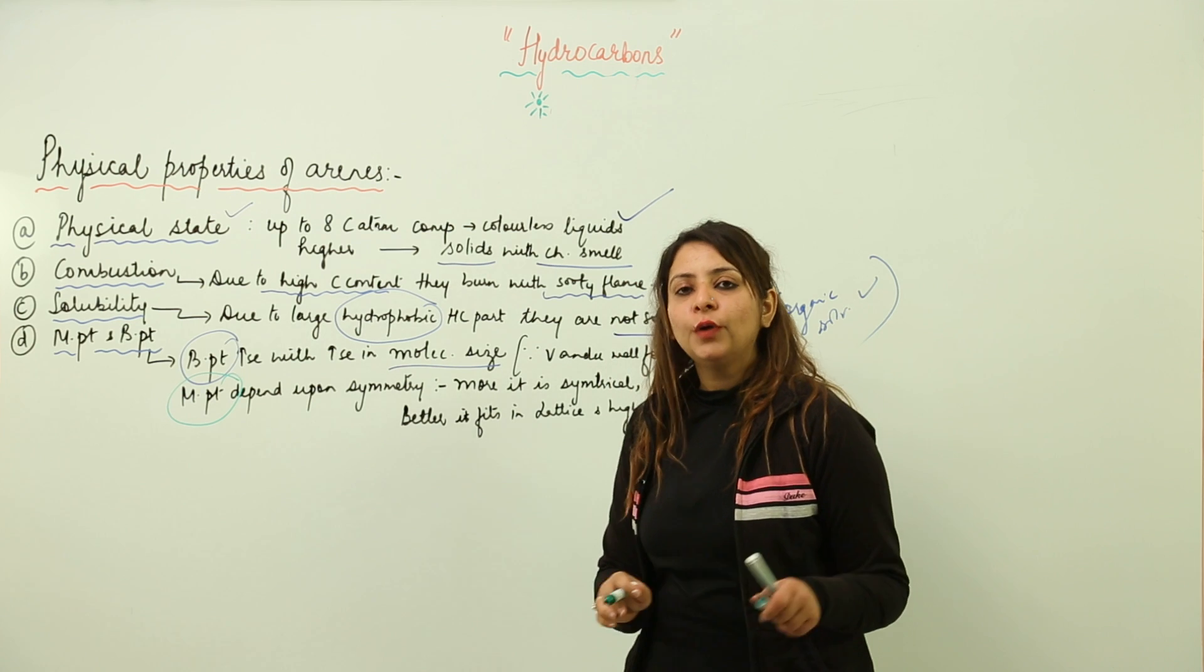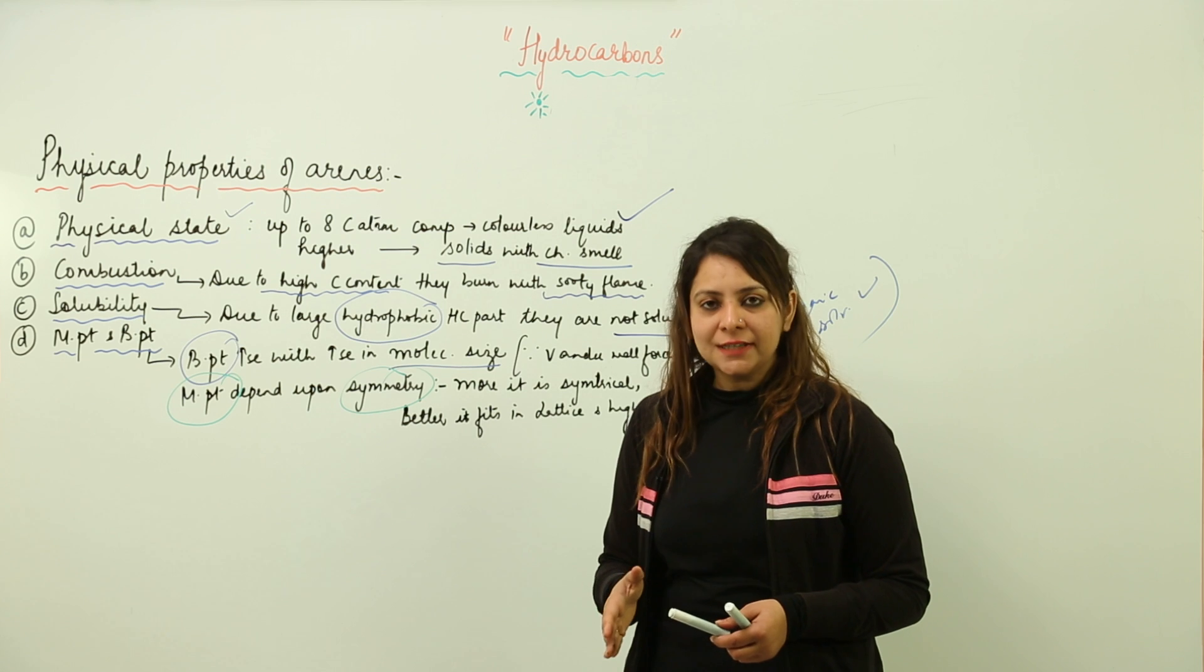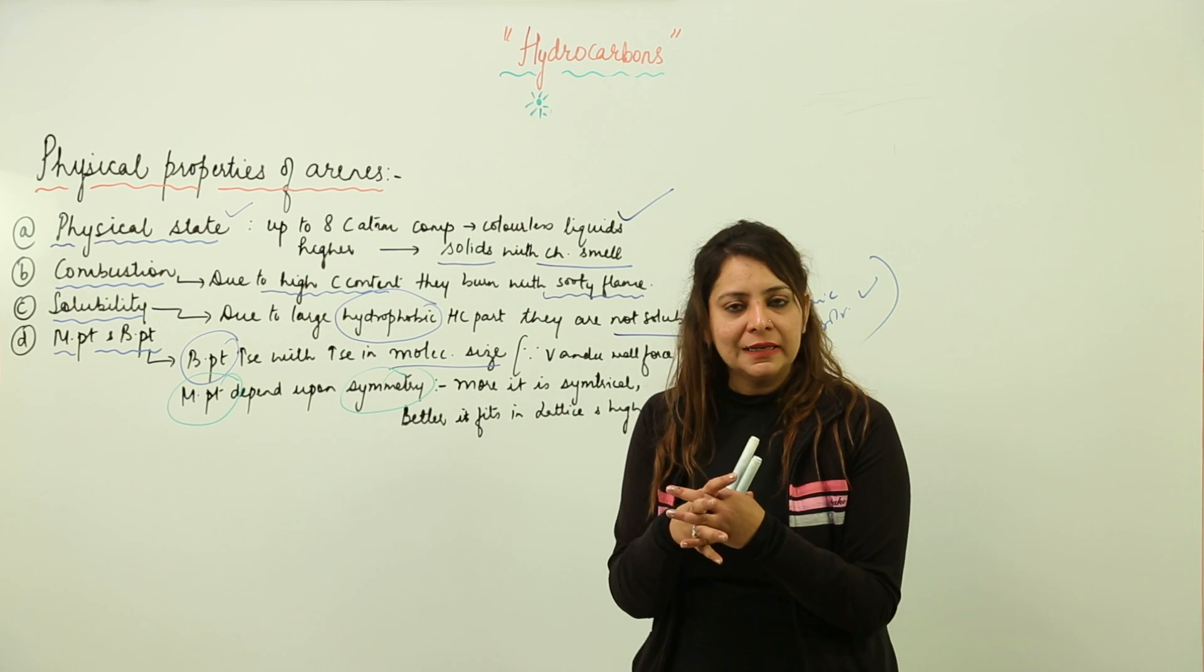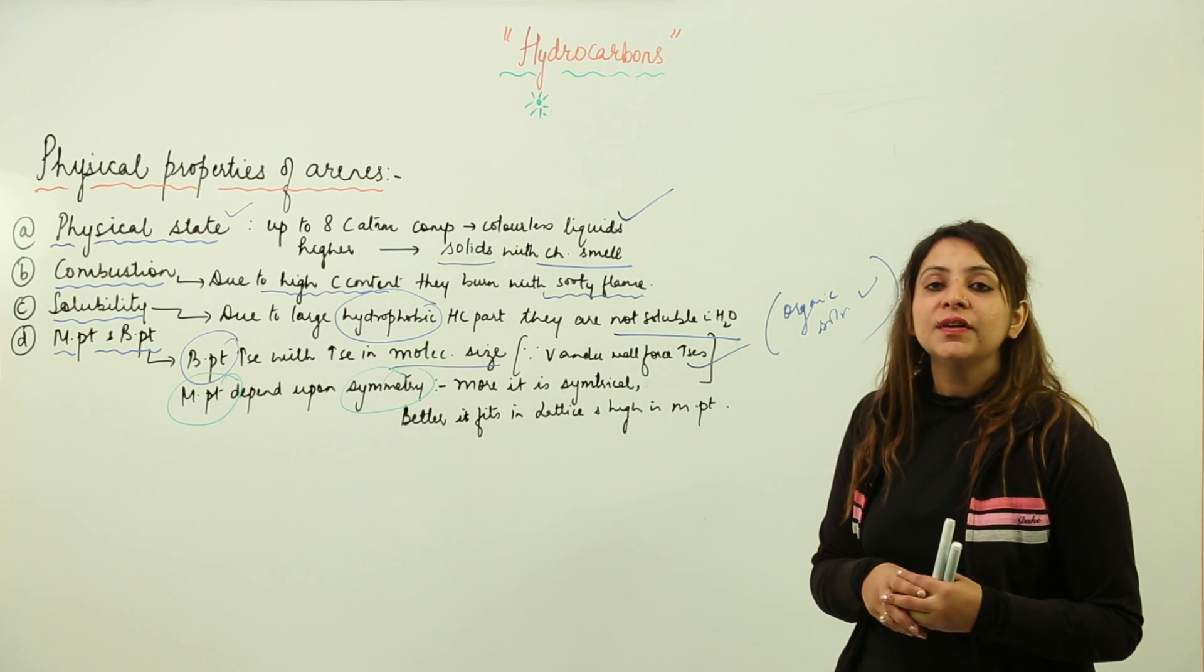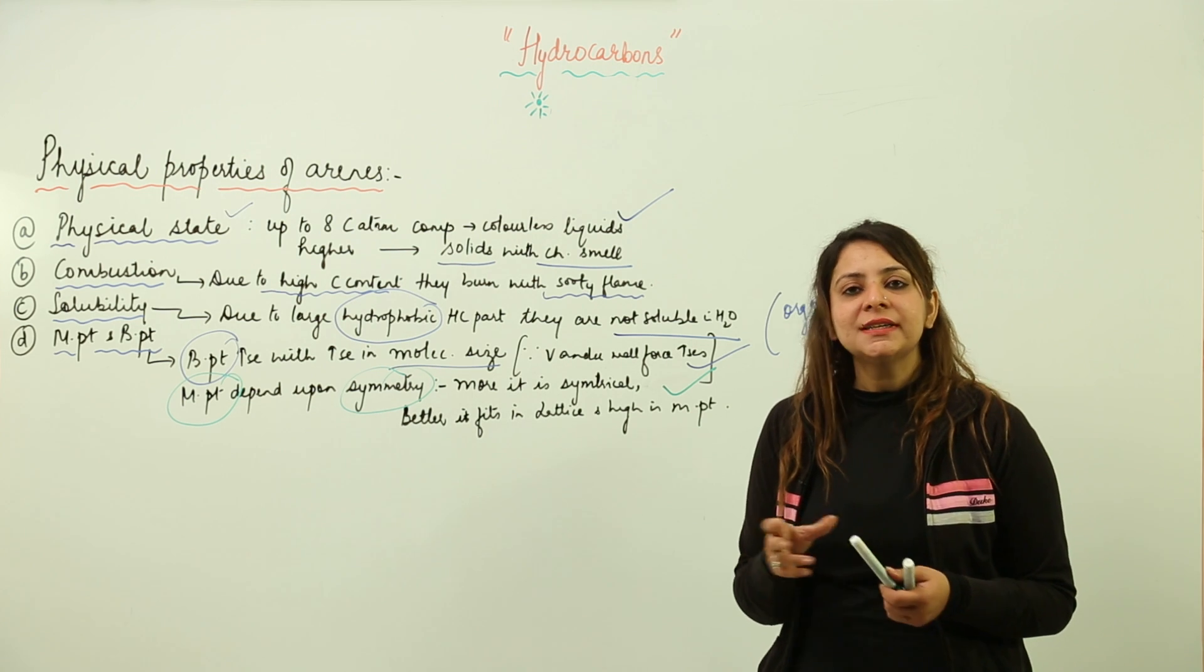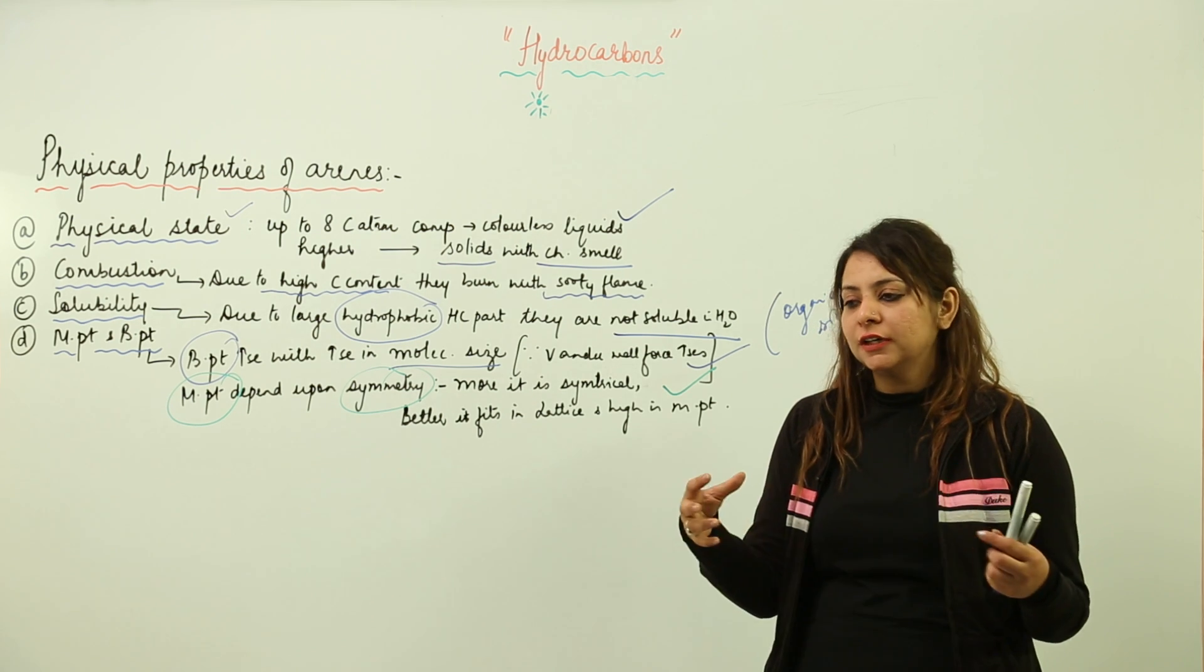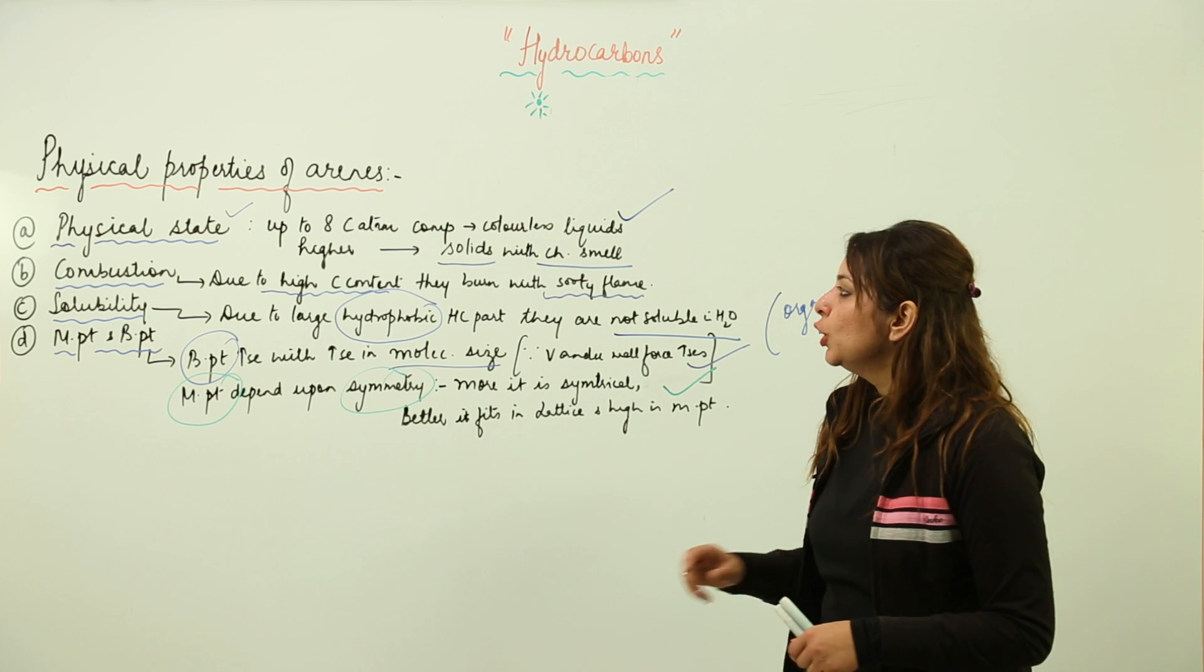On the other hand, if you see the melting point, melting point depends upon Van der Waals force and moreover it depends upon symmetry. All the symmetrical structures fit better into the lattice, and when they fit better into the lattice, they have high melting point. If you talk about unsymmetrical structures, they do not fit better into the lattice, so they are not tightly packed, due to which their melting point is comparatively low.